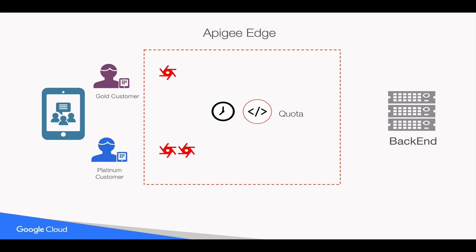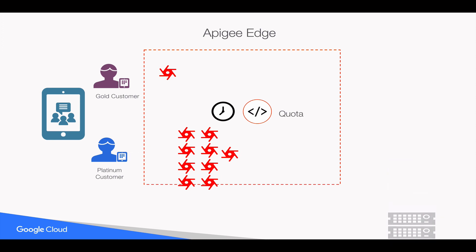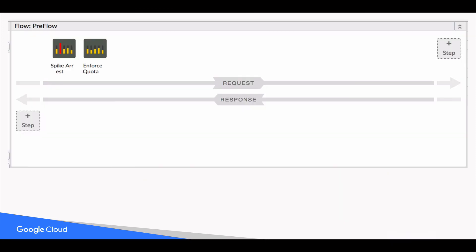But what if the Platinum customer intentionally or unintentionally invokes all 2,000 transactions at once? That will bring our backend systems down, and we don't want that. For that, we will use a Spike Arrest policy, and we can easily implement that by placing a Spike Arrest policy in front of our Quota policies.